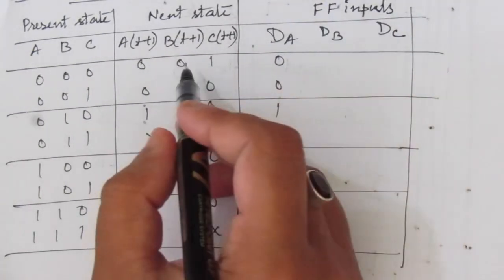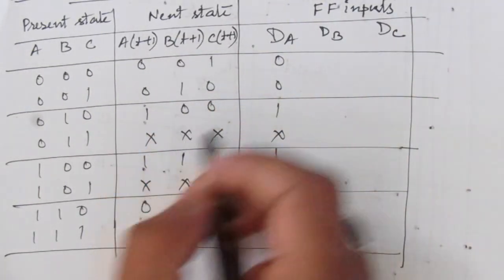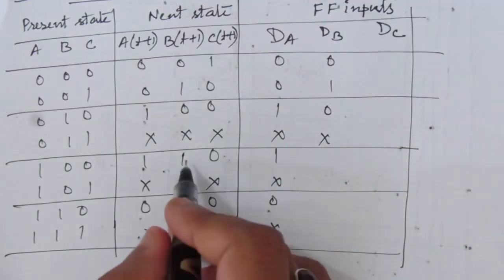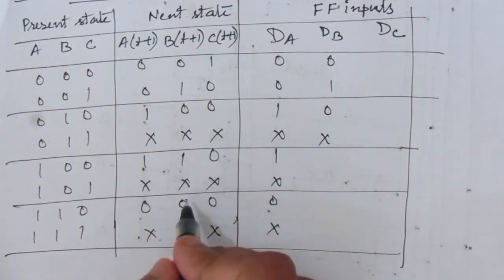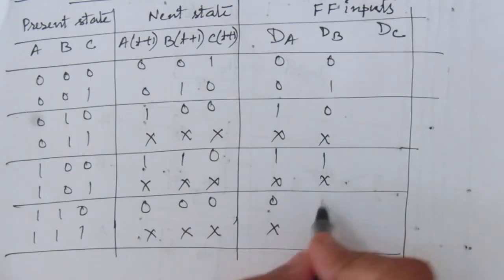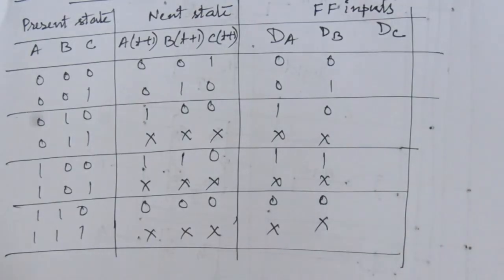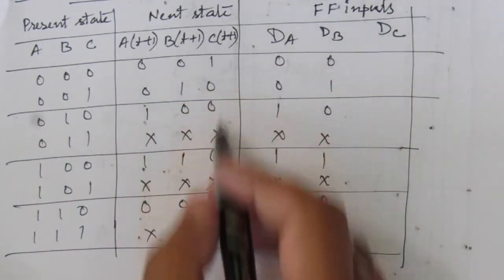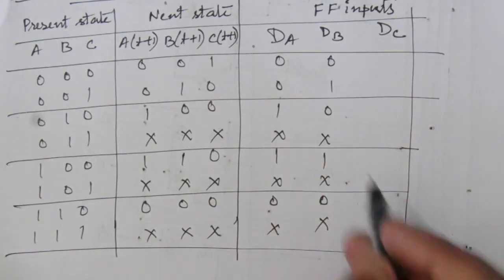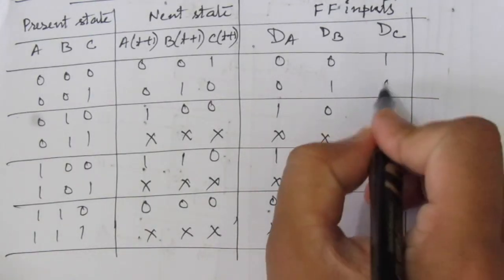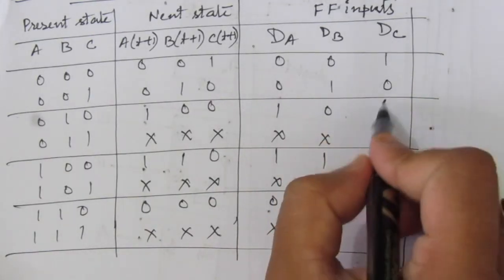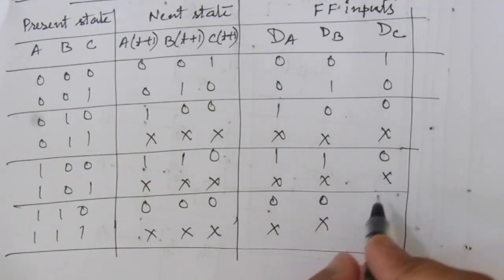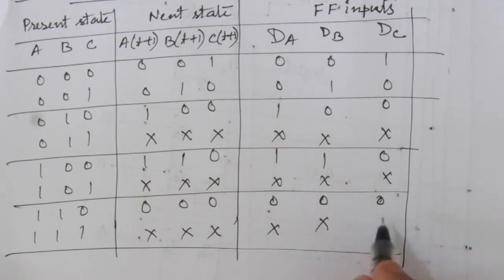Similarly, the DB column will be a replica of the next state B column: 0, 1, 0, don't care, 0, don't care, 1, don't care. Wait — correction: DB is 0, 1, 0, don't care, 1, don't care, 0, don't care. Then for DC, this column will mirror the next state C column: 1, 0, 0, don't care, 0, don't care, 0, don't care.